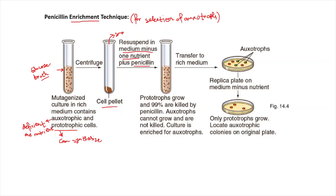Why does this medium lack one particular nutrient? Because it is lacking that particular nutrient that the auxotroph is not able to synthesize. That is why auxotrophs will not be able to grow in this medium. But prototrophs, because they can synthesize all nutrients for growth, can easily grow in this medium. The purpose of designing this medium to lack that essential nutrient is that we do not want auxotrophs to grow, but we do want prototrophs to grow. We are also adding penicillin to this medium.